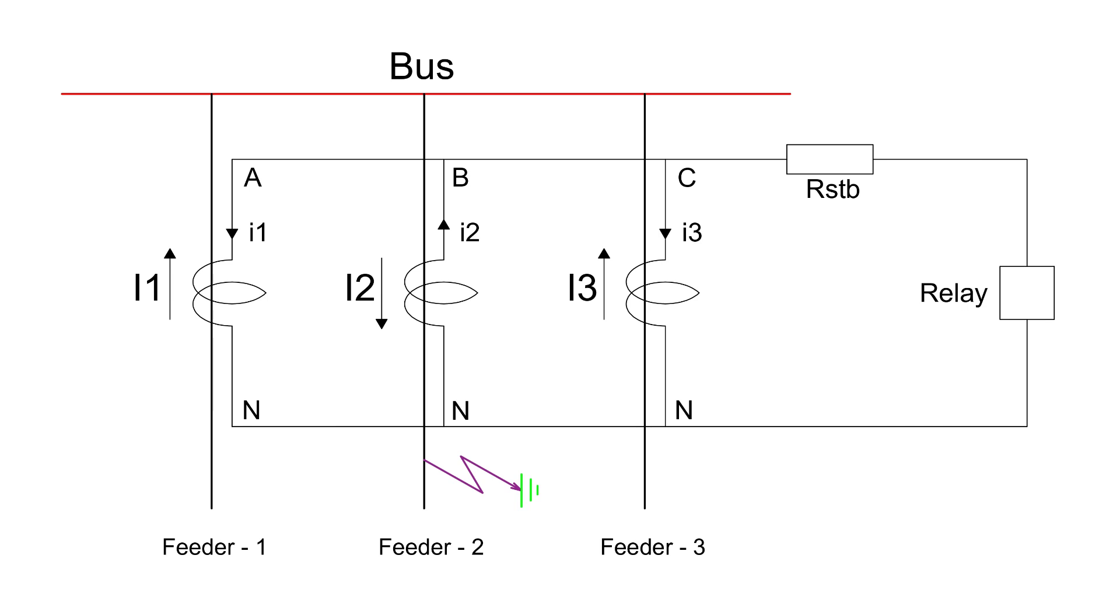When this happens, it no longer behaves as a current source, but rather acts as a resistor equal to the CT secondary winding resistance. As a result, the fault current does not flow towards the relay, but instead circulates within the saturated CT's secondary winding because current always follows the path of least resistance.